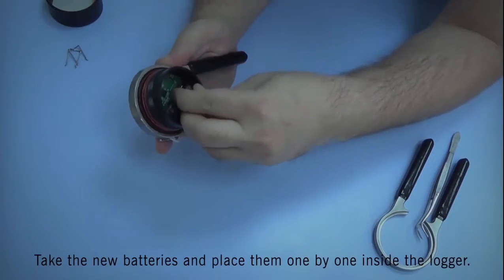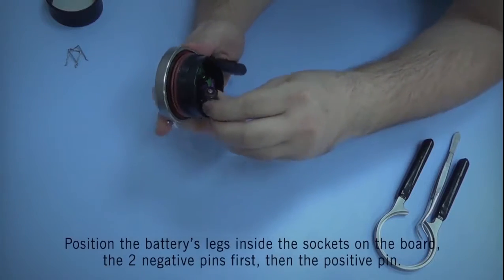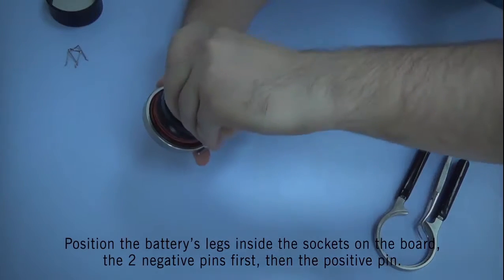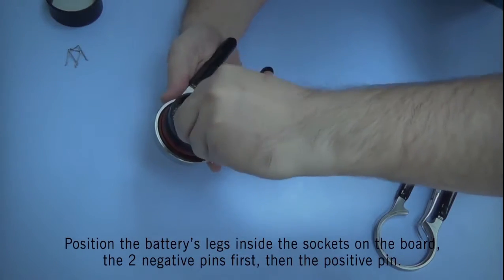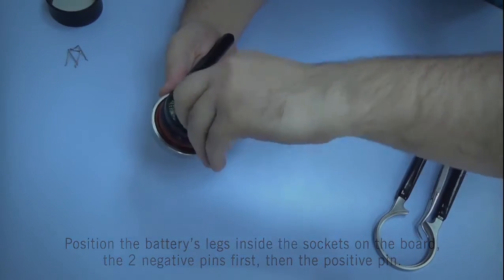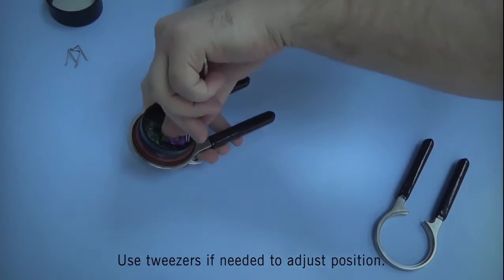You may now place the new batteries inside the logger. It is easier to align the two negative pins first and then the positive pin. If needed, you may use the tweezers to set the battery in place.